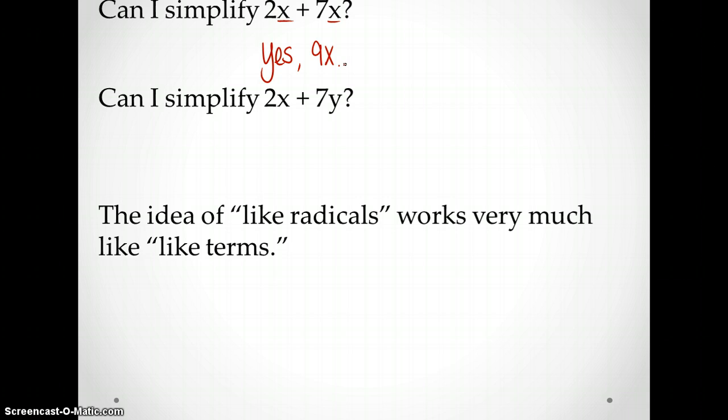Similarly, however, can I simplify 2x plus 7y? And we all know that the answer is no, because they are not like terms. They have to be like terms in order for us to be able to count up how many of these things that we have. If I have 2 apples and 8 apples, I have 10 apples. But if I have 2 apples and 8 oranges, I still have 2 apples and 8 oranges. I can't put them together and call them one thing.